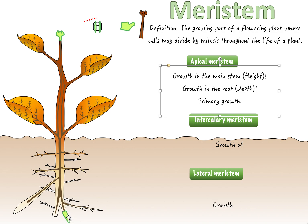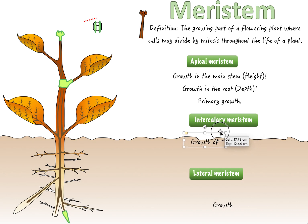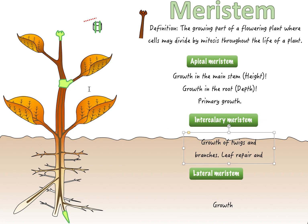The apical meristem is also in the root — this is for depth, so the root can grow deeper and branch further into the soil to get all the nutrients possible. If you're next to another plant that's stealing your resources, a good apical meristem in your root lets you grow deeper and find materials better. Next is the intercalary meristem, located in the middle area of the plant — it causes growth of leaves and branches.